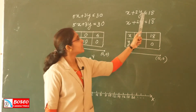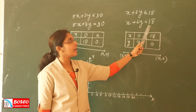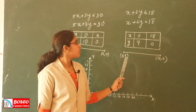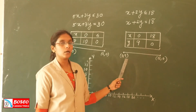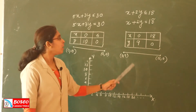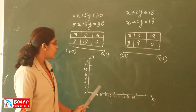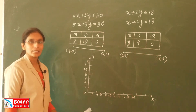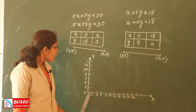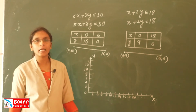Likewise, the second constraint is converted to its equality form — the equality is a line. We are plotting both lines on the X-Y plane, marking the X-axis and Y-axis intercept points for each constraint line.